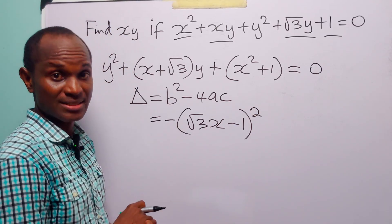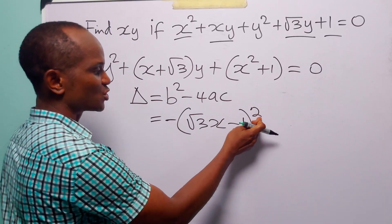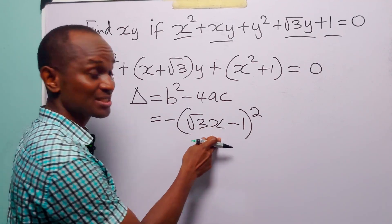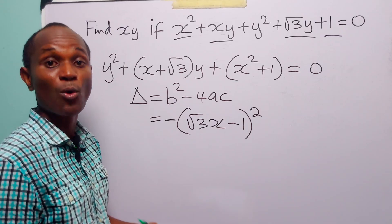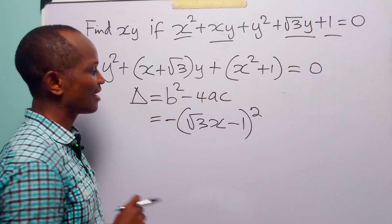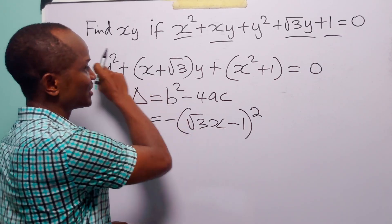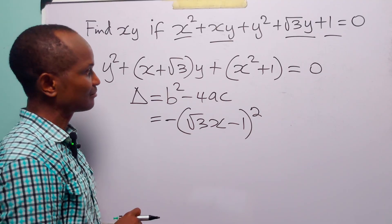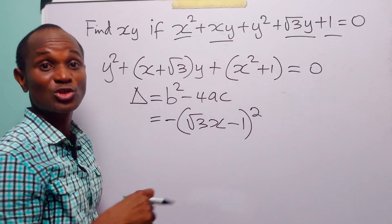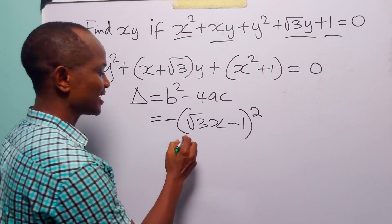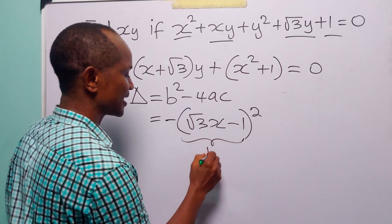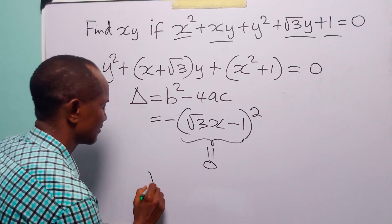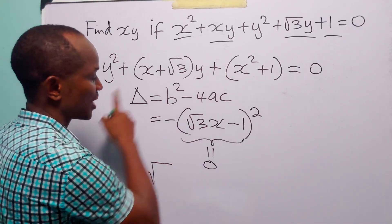Now, when you square any number it must be positive, so this is minus a positive number, which is negative. Therefore, the discriminant of this quadratic equation is negative. That means the only way for this quadratic equation to have real roots is if the discriminant is equal to 0.